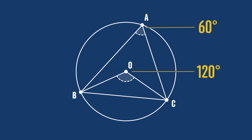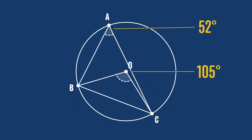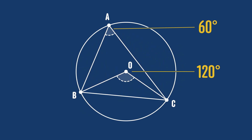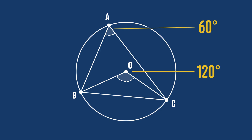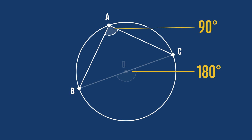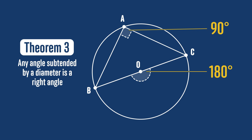We can move the point A around the circumference and also move the chord BC freely without impacting the result — the angle at the centre will still always be double the angle at the circumference. Let's suppose we move the chord BC so that it's now a diameter of the circle. In this case the angle BOC becomes 180 degrees because BOC is now a straight line, which means the angle BAC is half of that — 90 degrees. So we've actually proven another circle theorem: any angle subtended by a diameter is a right angle. A can be anywhere around the circle, and as long as the chord BC goes through the centre, angle BAC will be a right angle.